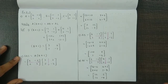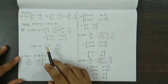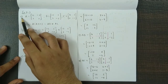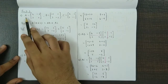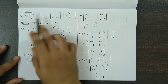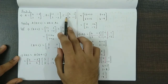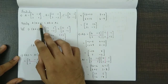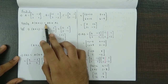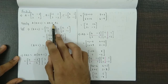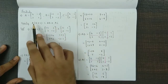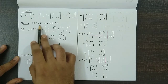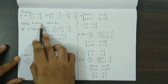Hello and welcome back. In this video we discuss question number five from exercise 2.3. We have been given three matrices A, B, and C and we have to verify that A into B plus C is equal to AB plus AC. So first of all for the left hand side we obtain the value, or rather the matrix.